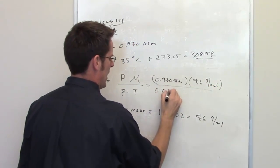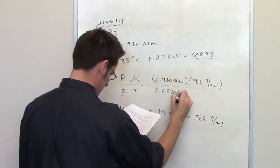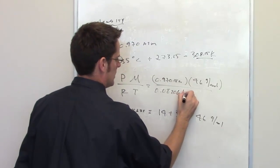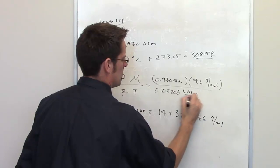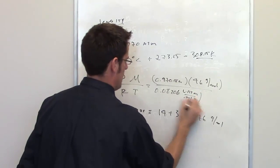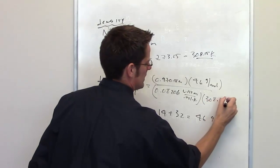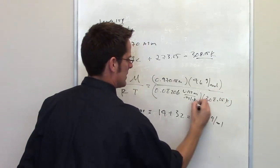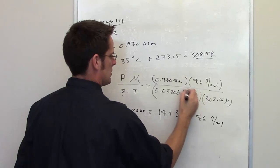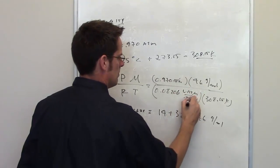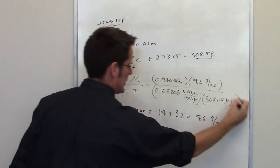R is 0.08206 liter atmospheres per mole Kelvin. And temperature in Kelvins is 308.15. The Kelvins cancel each other out. The atmospheres cancel each other out. The moles cancel each other out. And I'm left with, well, not enough room to do the problem, unfortunately.